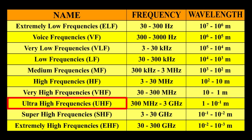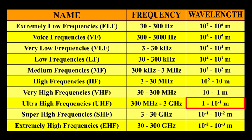Ultra high frequencies, i.e. UHF, the frequency will be 300 MHz to 3 GHz. The wavelength will be 1 to 10 raised to minus 1 meter.